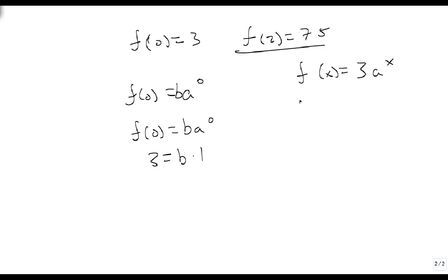Now let's go to this next one. f(2) equals 3 times a to the 2. Well f(2) is 75. Divide by 3, 25 equals a squared, and when I take the square root of this, again remembering it has to be positive, I get a is 5.